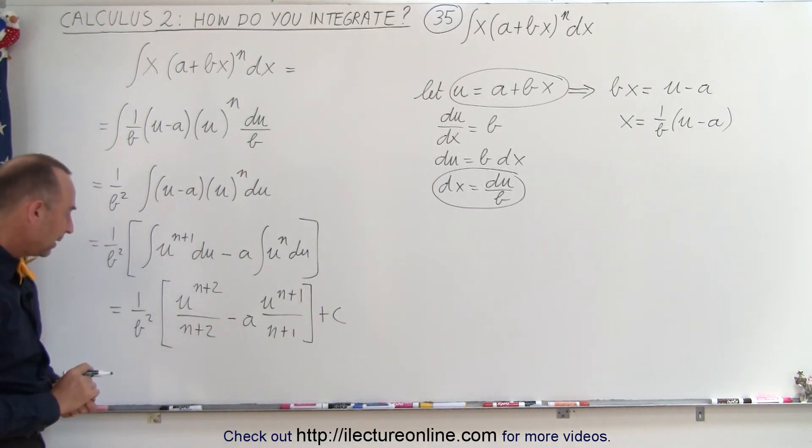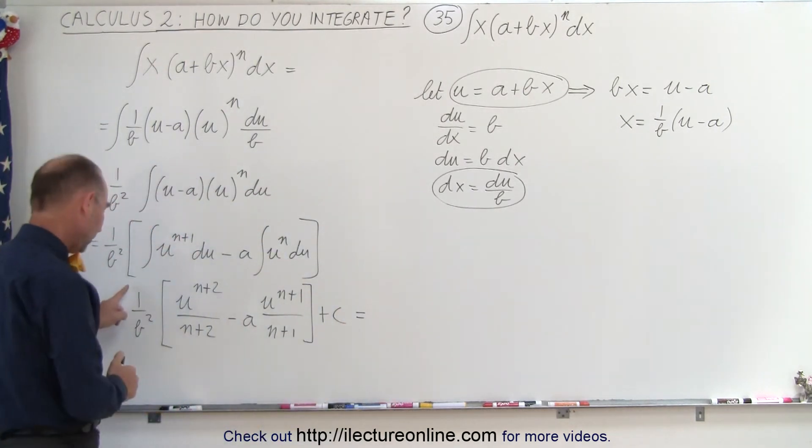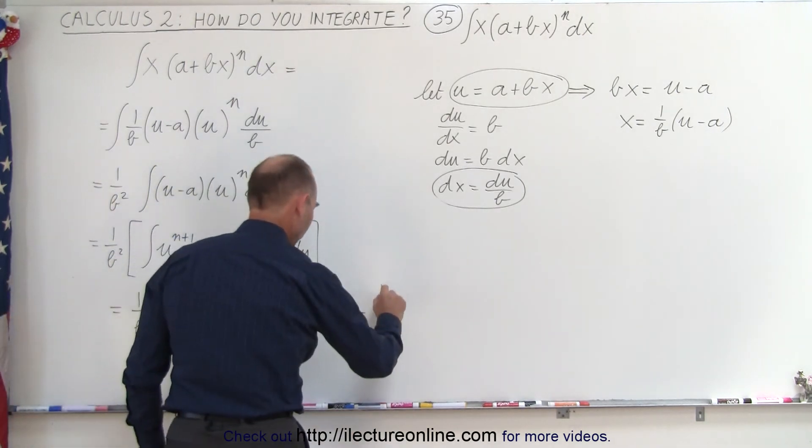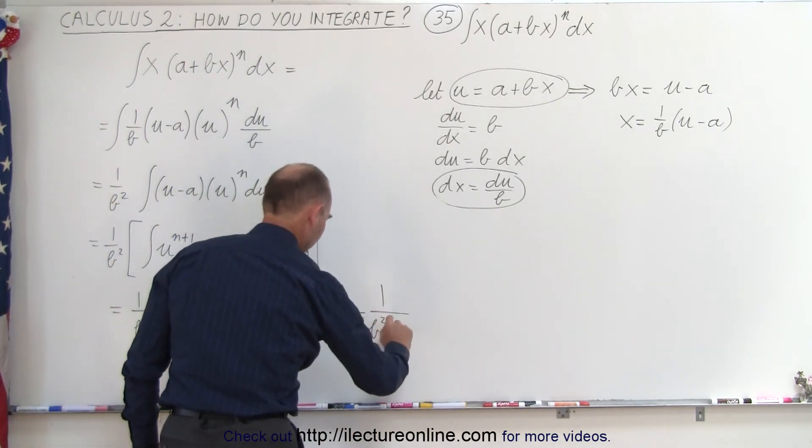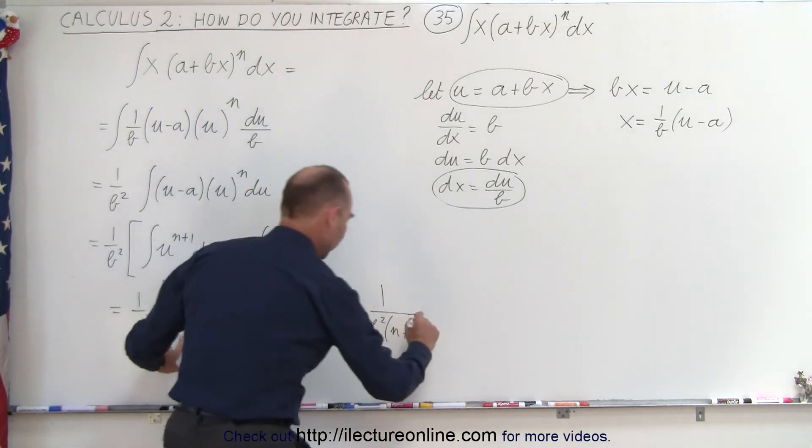We can write that in a more compact fashion. We have 1 over b²(n+2) in the denominator, which comes from here, times u^(n+2).